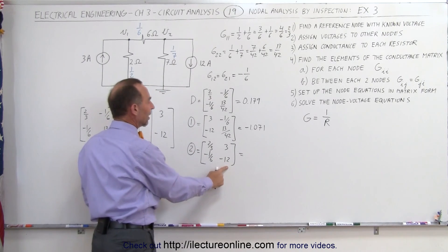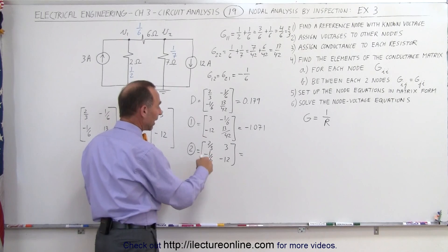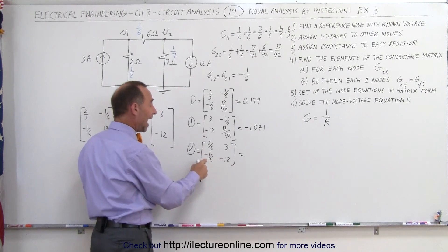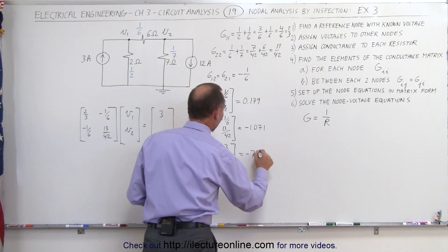2 thirds of minus 12 is minus 8, subtract, well, subtract the negative number that's like adding a number, minus 8 plus a half, 3 times 1, 6 is a half, that would be minus 7.5.